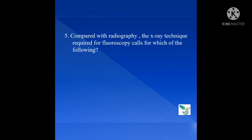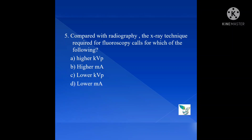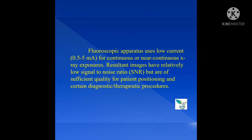Question number 5: Compared with radiography, the x-ray technique required for fluoroscopy calls for which of the following? Option A: Higher kVp; Option B: Higher MA; Option C: Lower kVp; Option D: Lower MA. The answer is Option D, Lower MA. Fluoroscopic apparatus uses low current — 0.5 to 5 milliampere — for continuous or near-continuous x-ray exposure. The resulting images have a relatively low signal-to-noise ratio but are of sufficient quality for patient positioning and diagnostic and therapeutic procedures.